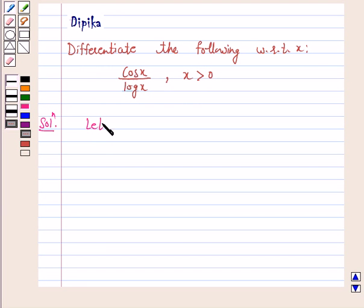Let y equals cos x upon log x, where x is greater than 0. Therefore, dy by dx is equal to, we will apply the quotient rule here.